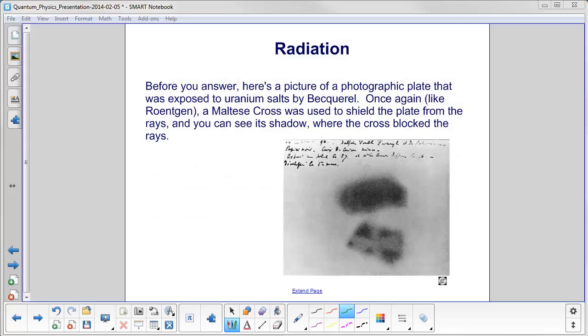Before you answer, or if you've already answered, here's some more help. Here's a picture of a photographic plate that was exposed to uranium salts by Becquerel. Once again, like Roentgen, a Maltese cross was used to shield the plate from the rays. You can clearly see its shadow, where the cross blocked the rays.